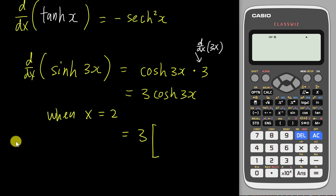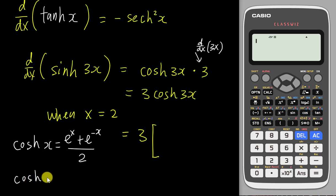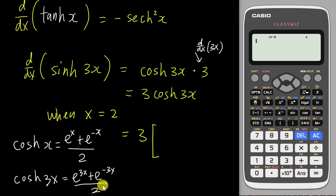We know the formula: hyperbolic cosine x equals e to the power of x plus e to the power of negative x, divided by 2. Therefore, hyperbolic cosine 3x equals e to the power of 3x plus e to the power of negative 3x, divided by 2.